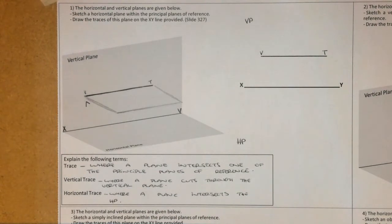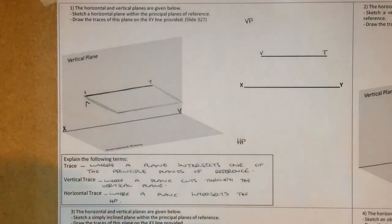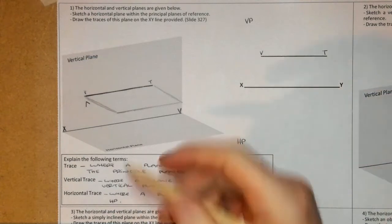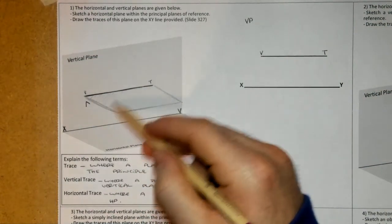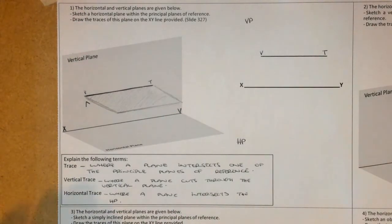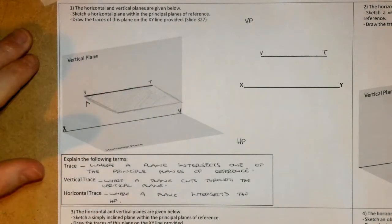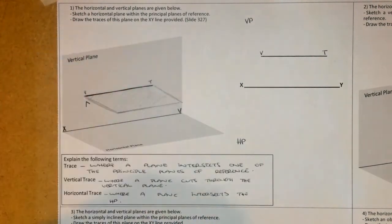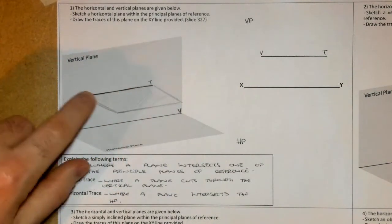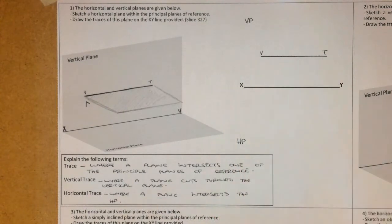We have the vertical plane and the horizontal plane, and a plane floating in midair. That plane intersects the vertical plane, and where it cuts through is known as the vertical trace. How that appears on an orthographic drawing is just as a line. Now moving on to question two.